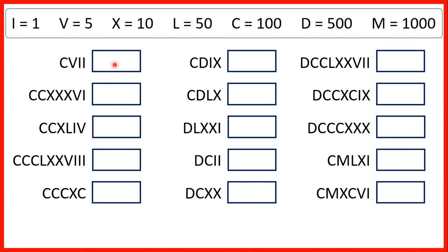Now, we need to write the numbers represented by these Roman numerals. So first, we have C, which is 100. Then we have the VII, so that's 5 and then two 1s, which is 7. So this number here is 107.